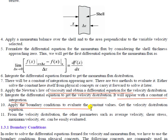Tenth, apply the boundary conditions to evaluate the constant values. The boundary conditions from the momentum balance equations will be verified at each step. Eleventh, get the velocity distribution equation. The final step is that from the velocity distribution, other parameters such as average velocity, shear stress, and maximum velocity can be easily evaluated.